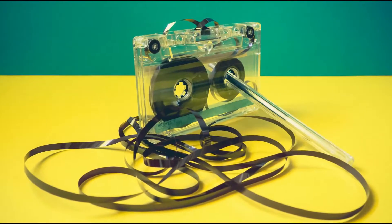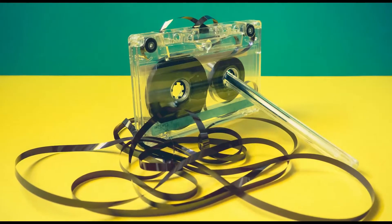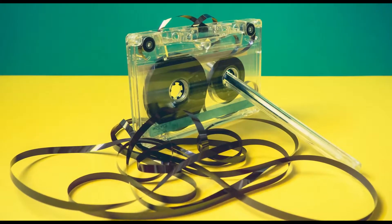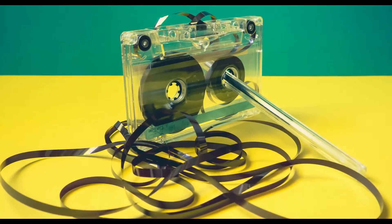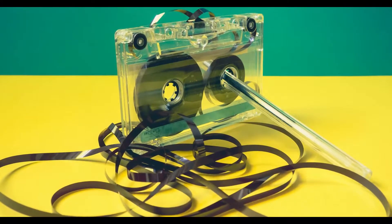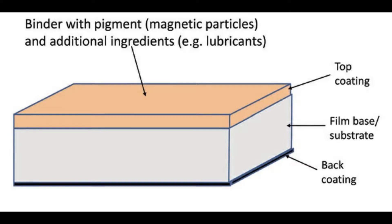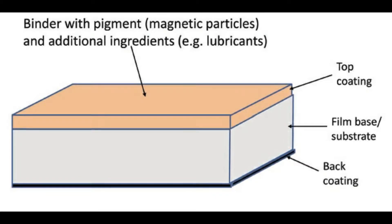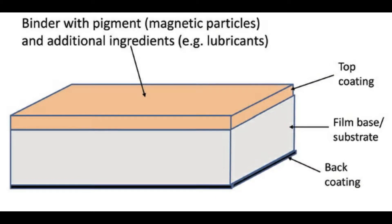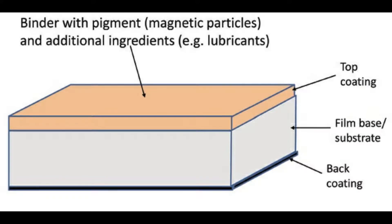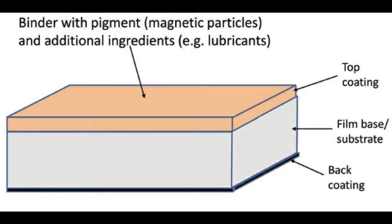Now let's see the physics behind it. The design of a cassette tape looks very simple. The tapes which are inside a cassette are made of flexible material like PVC or mylar. It is coated with ferric oxide. The oxide is ferromagnetic — this means when it is placed in a magnetic field, it will be permanently magnetized.